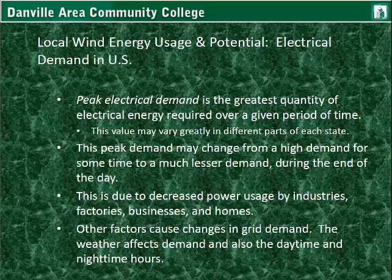Other factors cause changes in the grid — weather, even rain getting cloudy means a whole lot of lamps and security lights will turn on. Pumps for rain, and if it's humid, air conditioning — it fluctuates from time to time.